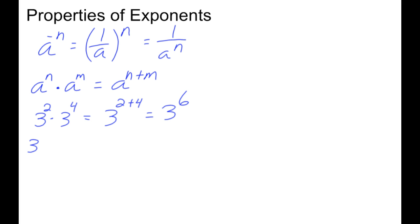3 squared is 3 times 3, and we're going to multiply that by 3 to the 4th. That gives me a total of 1, 2, 3, 4, 5, 6. That's why it is 3 to the 6th.